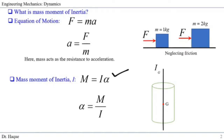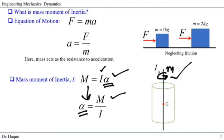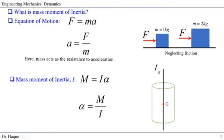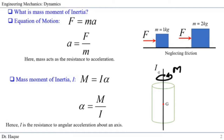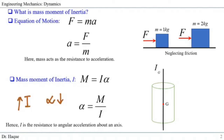The rotational equivalent is defined as M equals I·α, where I is the mass moment of inertia, α is the angular acceleration, and M is the moment. If we have a cylinder and there is a moment M acting on it, the rotational acceleration can be defined by this equation. The acceleration depends on the mass moment of inertia. In other words, the mass moment of inertia is the resistance of a body against angular acceleration.